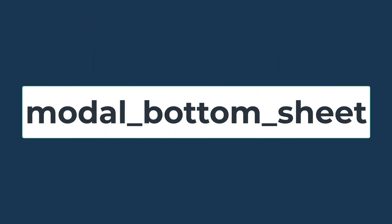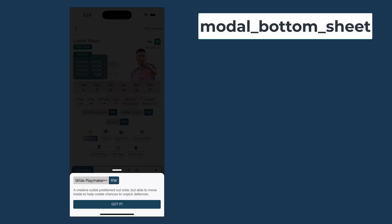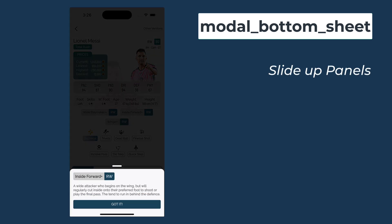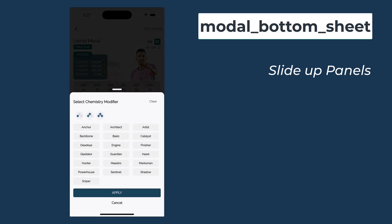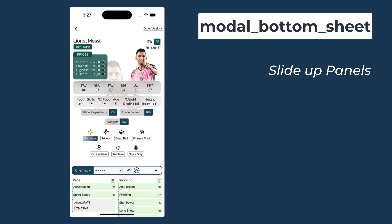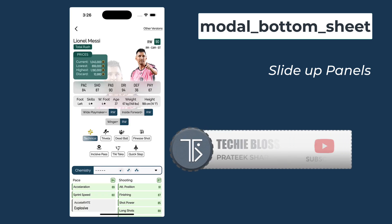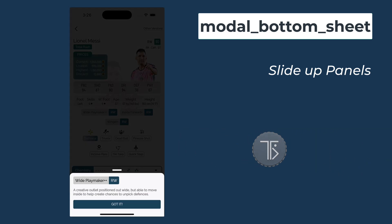Second on the list is modal bottom sheet. Bottom sheets are commonly used for presenting content or actions in a slide-up panel from the bottom of the screen. This package offers a more flexible, feature-rich approach to bottom sheets compared to the default Flutter implementation. The package is perfect for implementing action sheets or filters that allow users to select options or perform actions directly from the bottom of the screen, which is a common design pattern in mobile applications.